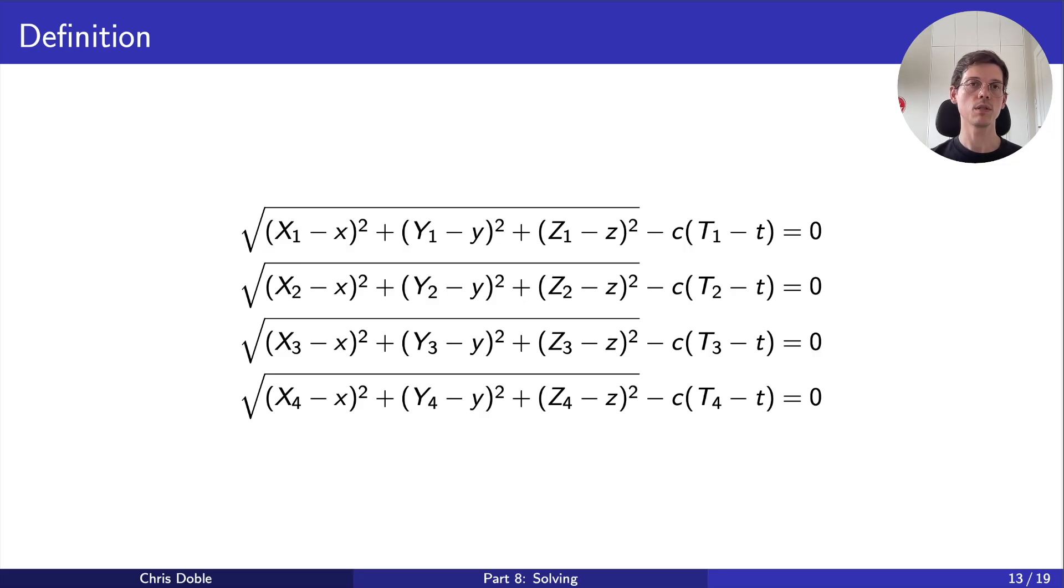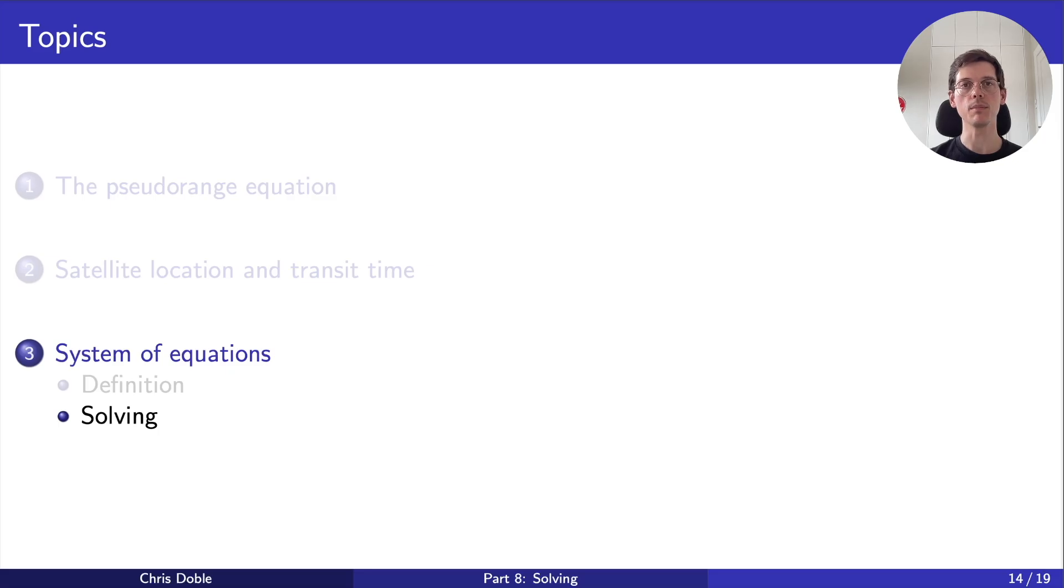A perfect solution to this system would satisfy all of the equations. That is, when we substitute values for lowercase x, y, z, and t into the left-hand sides, they'd all evaluate to zero. But will we be able to do that? We need to remember that our measurements are quite noisy, and we'll receive signals from closer satellites before ones that are further away. That means some measurements might be taken at different times. It seems unlikely that we'll be able to find a perfect solution. However, we can try to find the best solution we can by minimizing the error.